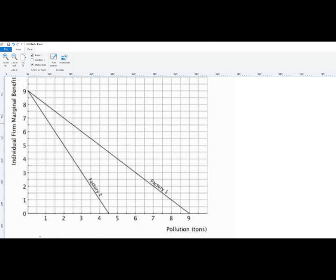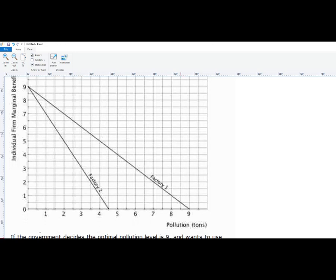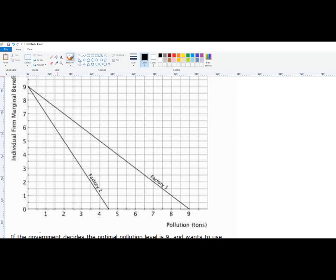So we've got a problem that says if the government wants to decide the optimal pollution level is 9 and wants to create an excise tax to reduce pollution to the optimal level, which tax should it be set at? What we can do is we have to find out where quantity 9 is reached on the x-axis.